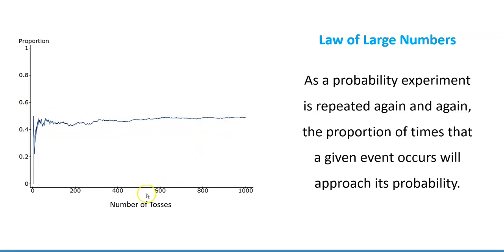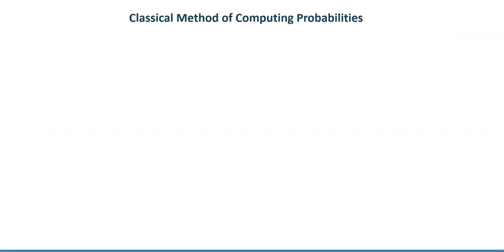As the probability experiment is repeated again and again with the number of tosses increasing, the proportion of times that a given event occurs will approach its probability. When we toss a coin a lot of times, about half of the time we should get heads and half of the time we should get tails, even though they will not alternate. But can we calculate probability without repeating the experiment one thousand or one million times? Yes, and it's called the classical method of computing probabilities, which works for experiments when our outcomes are equally likely.